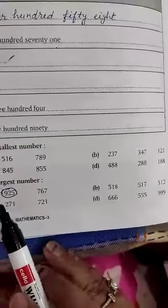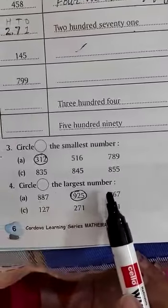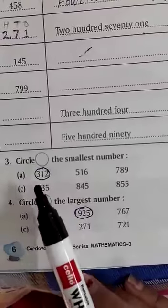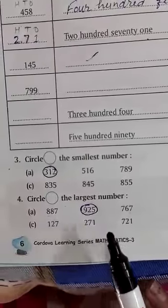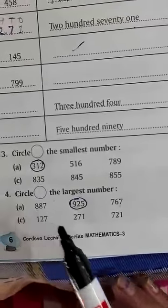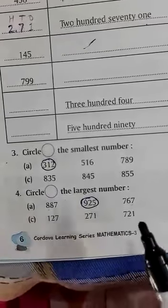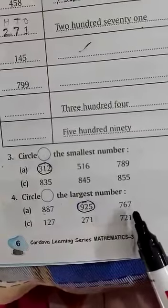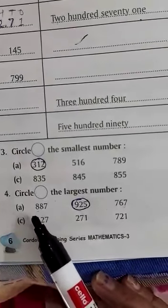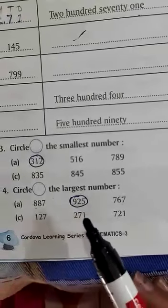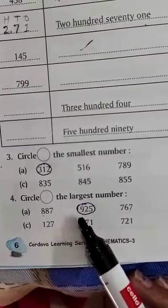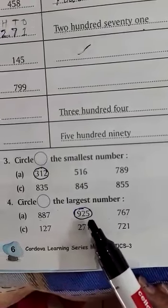Question 4: Circle the largest number. Similarly, in question 3 we circled the smallest number. Here, we will circle the largest number: 887, 925, 767. So, which is the largest number? At 100 place, we will see: 800, 900, 700. We will circle 900 because it is the largest, 925.